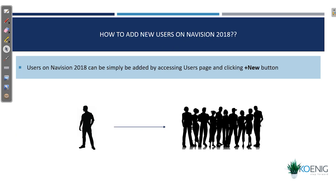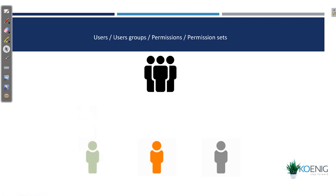Now we know what permissions are, what a permission set is, and what users and user groups are. The second question naturally is: how am I going to grant permissions to my users? In Navigation 2018, we have a process of creating users which is pretty simple — you just have to go to a particular page called users and click the new button. It depends on you as an admin whether you want to create a user group or go user-by-user when granting permissions.